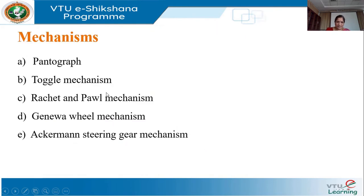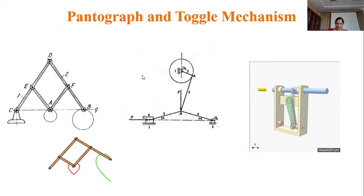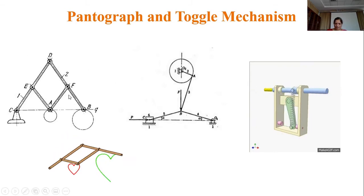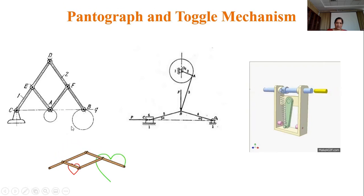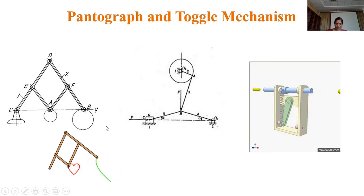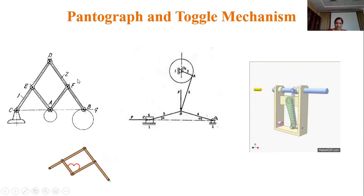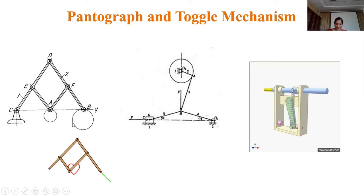Next I will discuss some other mechanisms: the pantograph, toggle mechanism, ratchet and pawl mechanism, Geneva wheel mechanism, and Ackermann steering gear mechanism. The pantograph is a copying mechanism used to enlarge or reduce movements — for example, copying a larger circle as a smaller circle — and to enlarge or reduce the scale of a drawing.